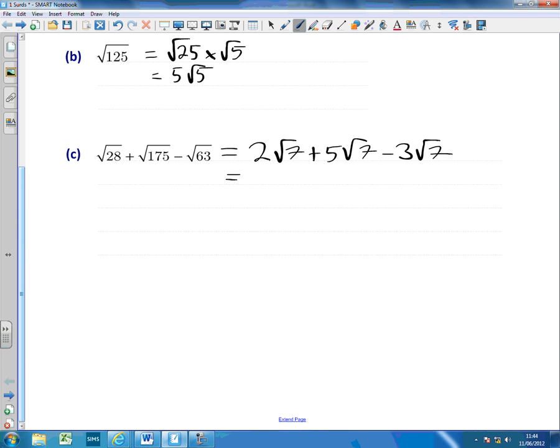Now, by chance, we have lots of √7s here. So we can collect them together. So we've got 2, 5, so 7, minus 3. So 4√7. And that's as simple as we can write that.